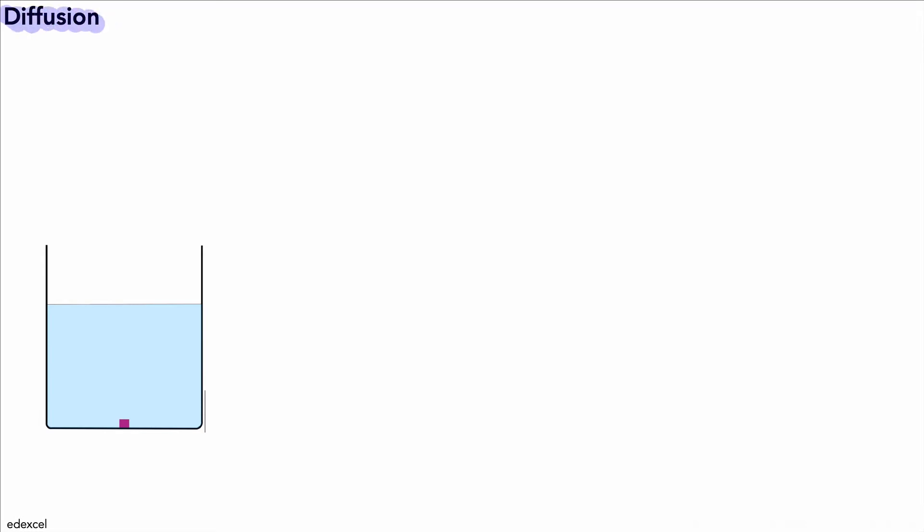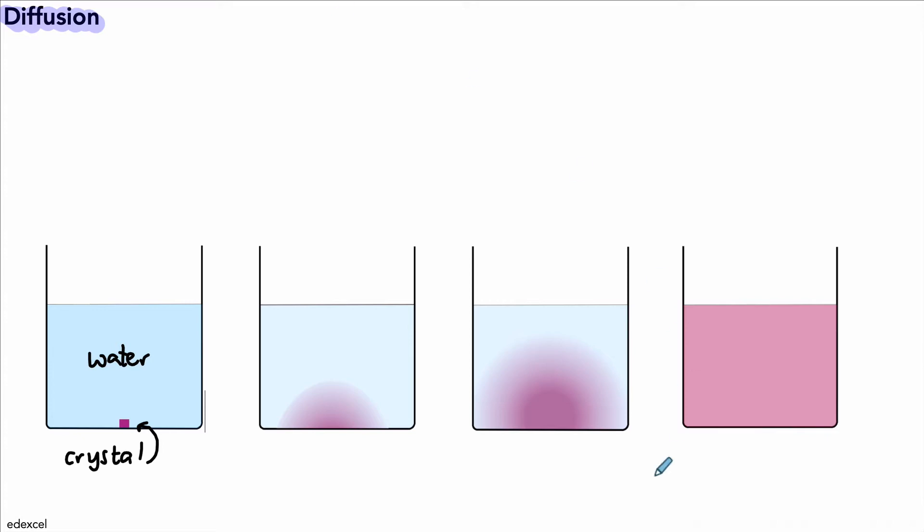One example we can use to demonstrate diffusion is if we have a container of water with a crystal of potassium permanganate. It's a colored crystal that will spread into the water if we leave it at the bottom. It will start to dissolve and after a period of time, the color will spread throughout the water until it is spread evenly. This is an example of diffusion.